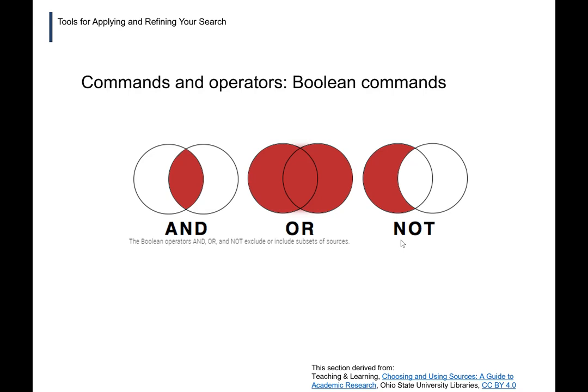So if we were researching cats and dogs — cats being the left circle and dogs being the right circle — using AND would only pick up the overlapping area: articles that are somehow about both cats and dogs, not articles about cats to the exclusion of dogs or dogs to the exclusion of cats. Using OR, you would get all articles about cats, dogs, or cats and dogs — so the entire area of both circles, including where they don't overlap.